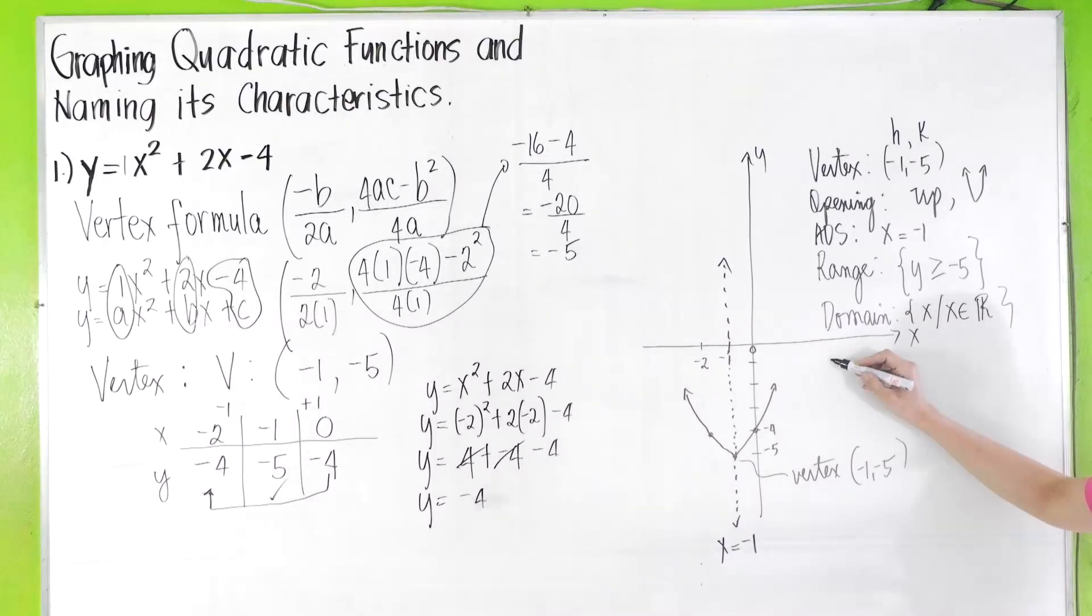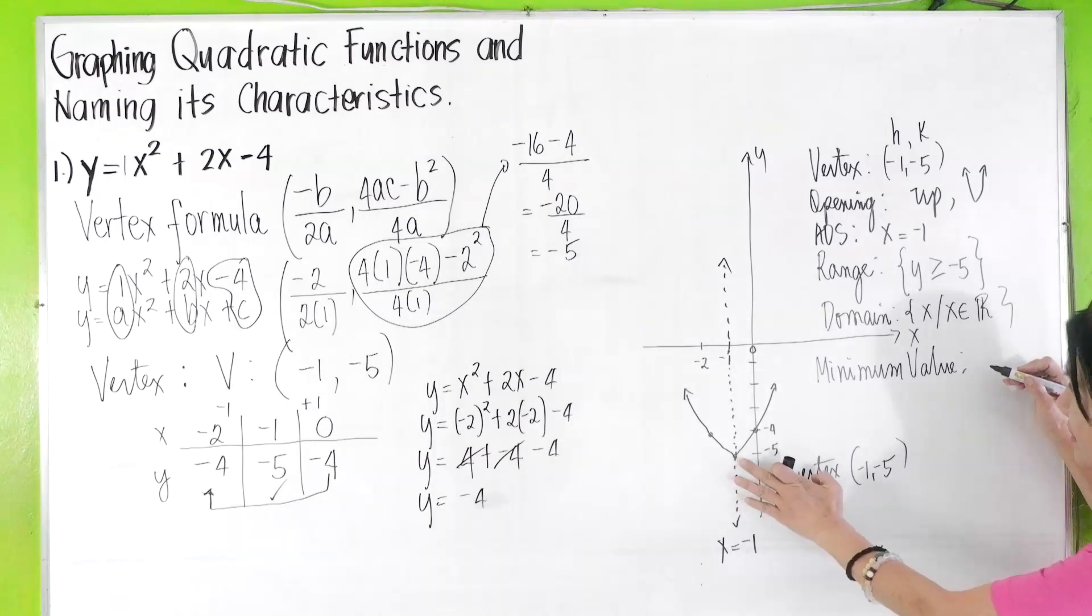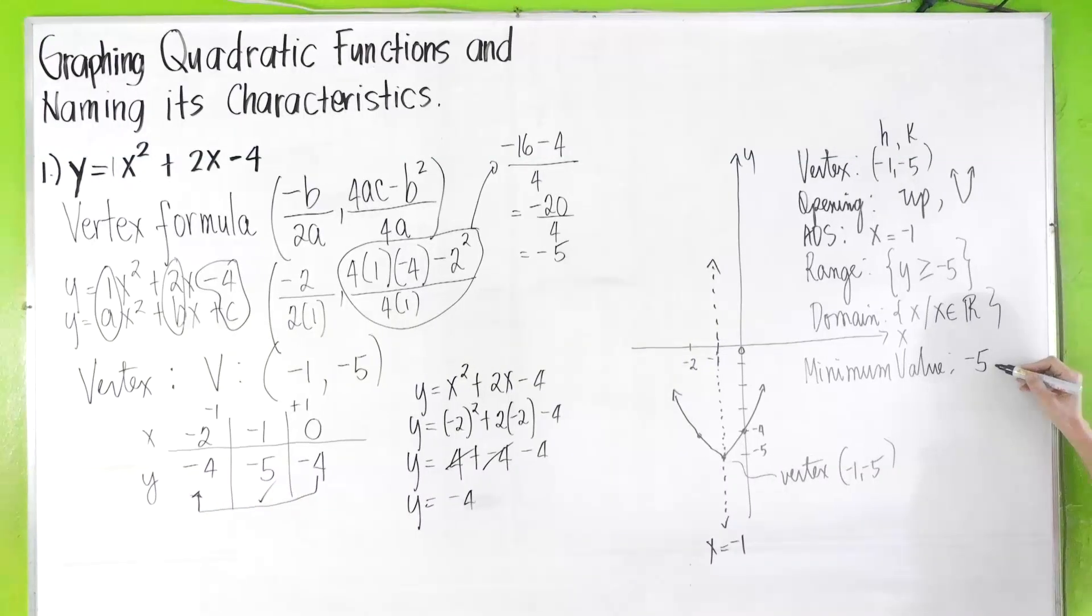And, what about your minimum or maximum value? Do we have a minimum or maximum value here? Here, your parabola is opening upward, so this gives you the minimum value. So, the minimum value is given by your k value, which is -5, going up. So the minimum is -5, k or -5.